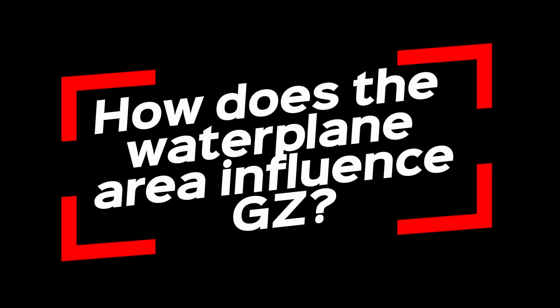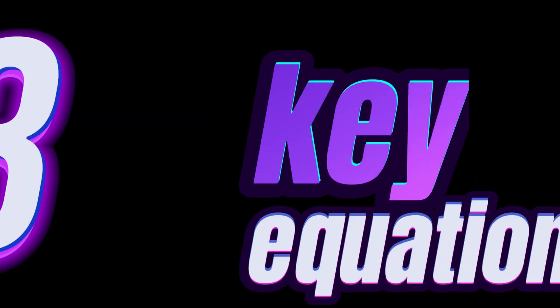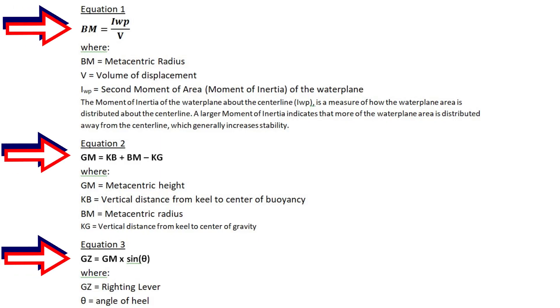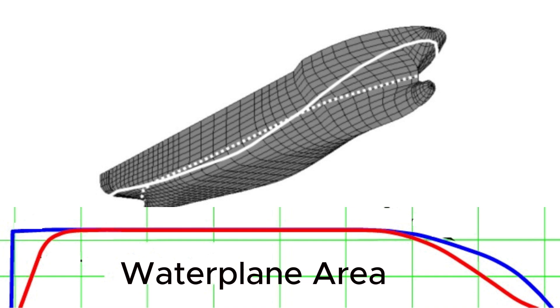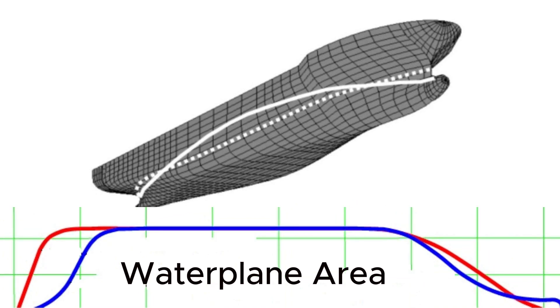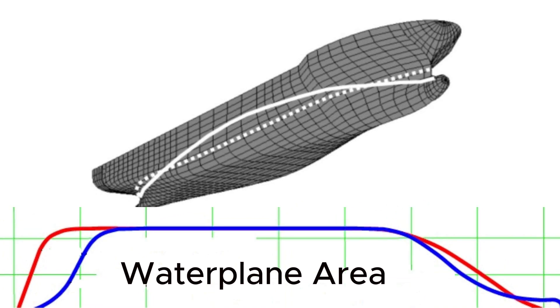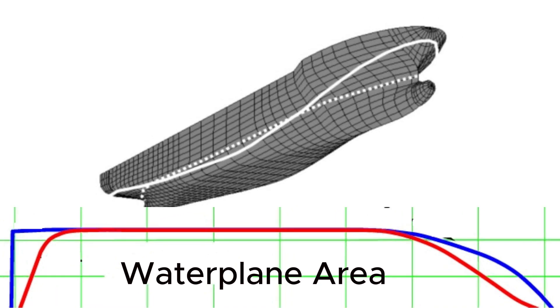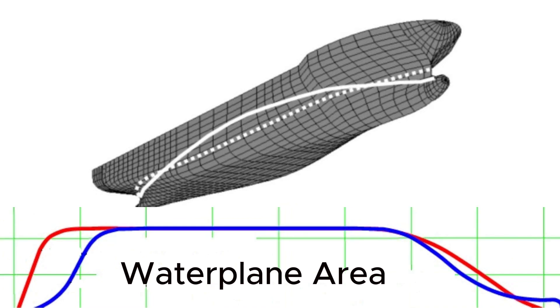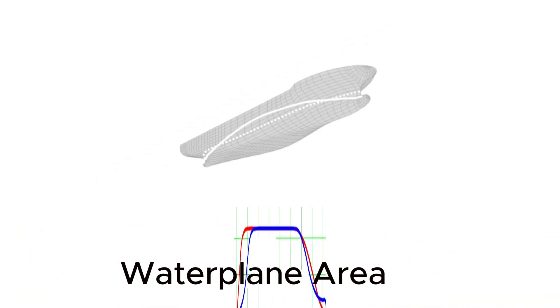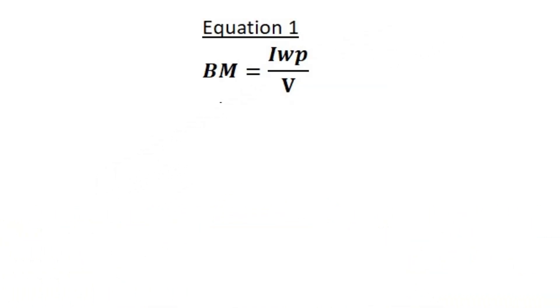The relationship between the water plane area and GZ can be understood through three key equations. We saw that when the ship moves through waves, the water plane area changes, which may become significant if the wavelength is comparable to the ship length. The water plane area directly affects the moment of inertia of the water plane about the centerline, also known as the second moment of area.